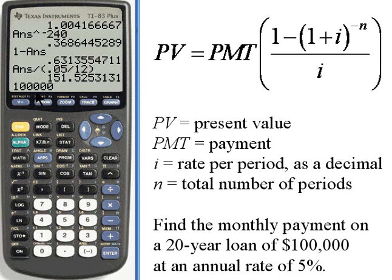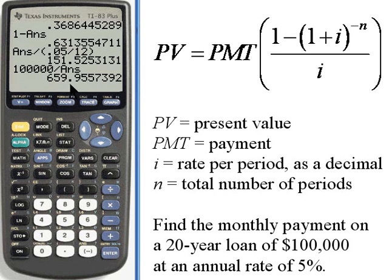Make sure you get the right number of zeros. And divide that by the previous answer, by that 151. So I want 2nd, and then answer. And what I find out is the amount you're going to pay per month is $659, and we'll round that up to 96 cents.